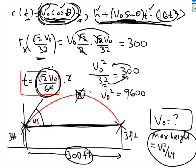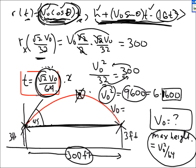So the x component gives v₀²/32 = 300. Therefore v₀² = 9600. Factoring: 9600 = 6 × 1600. Taking the square root: v₀ = 40√6. We now know v₀ and v₀² = 9600.